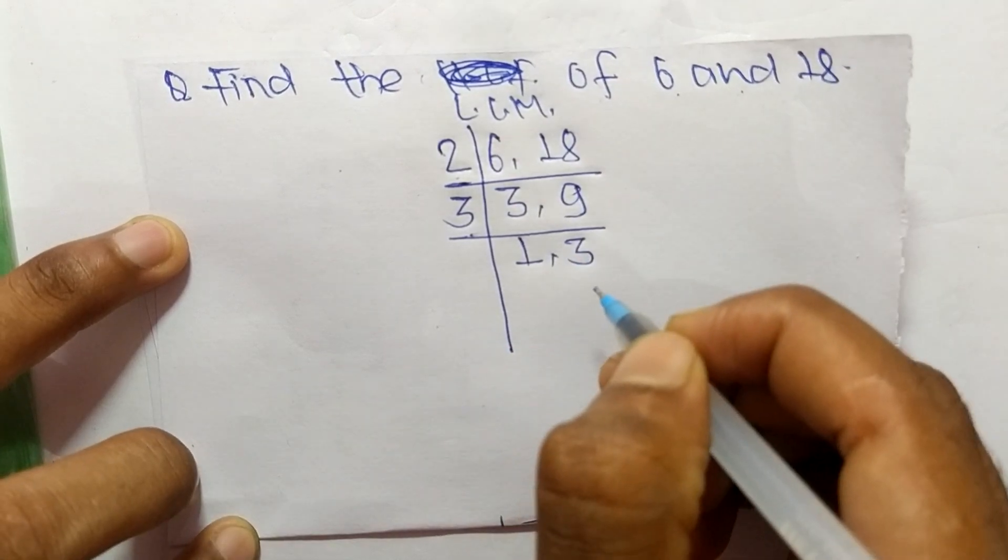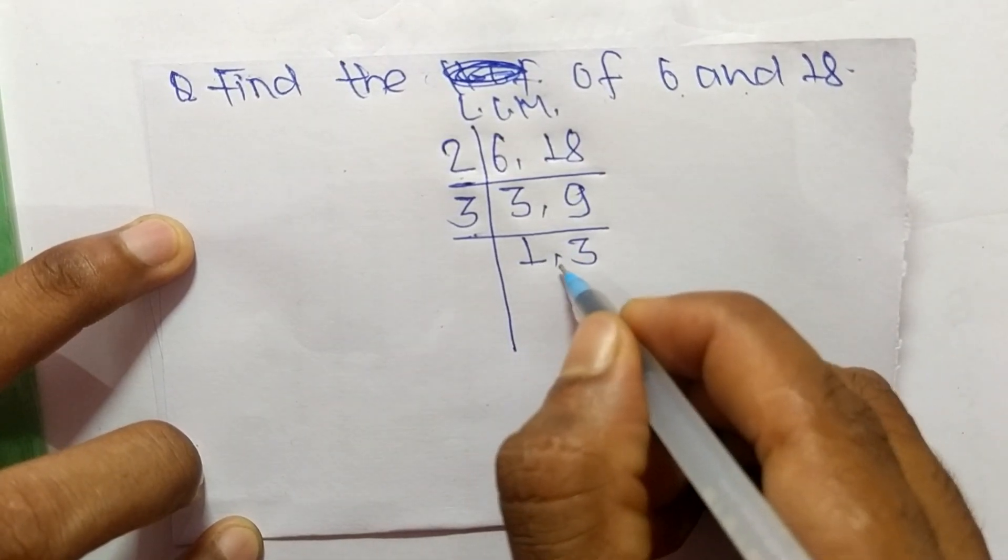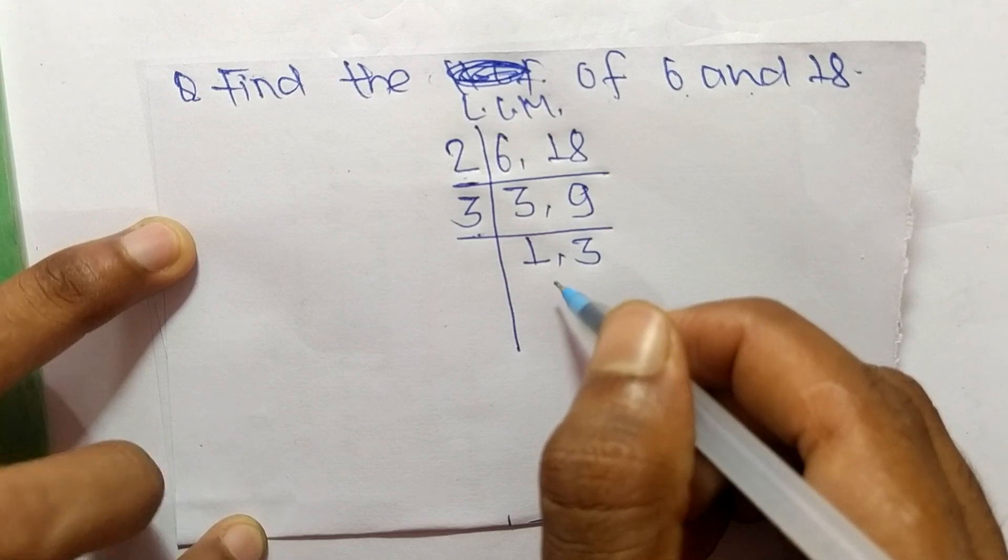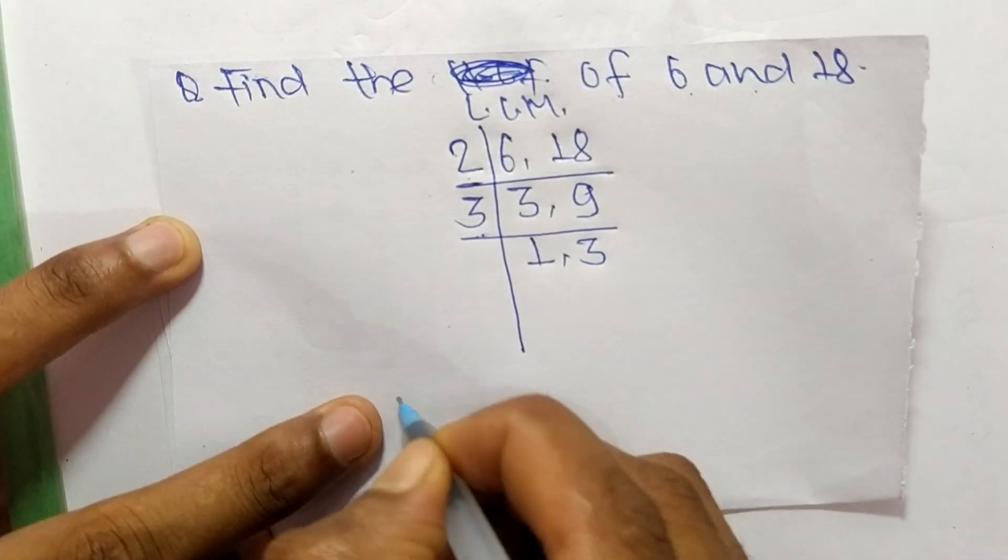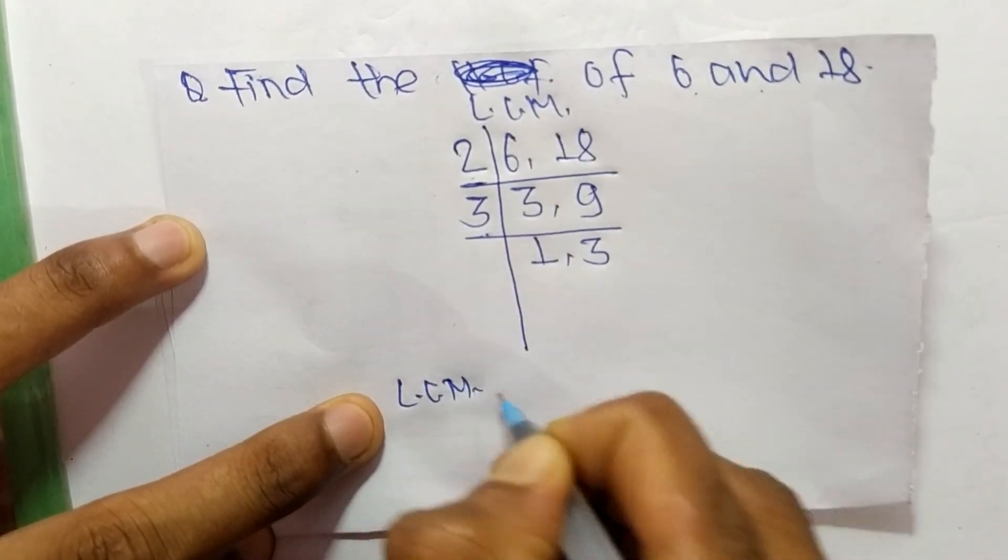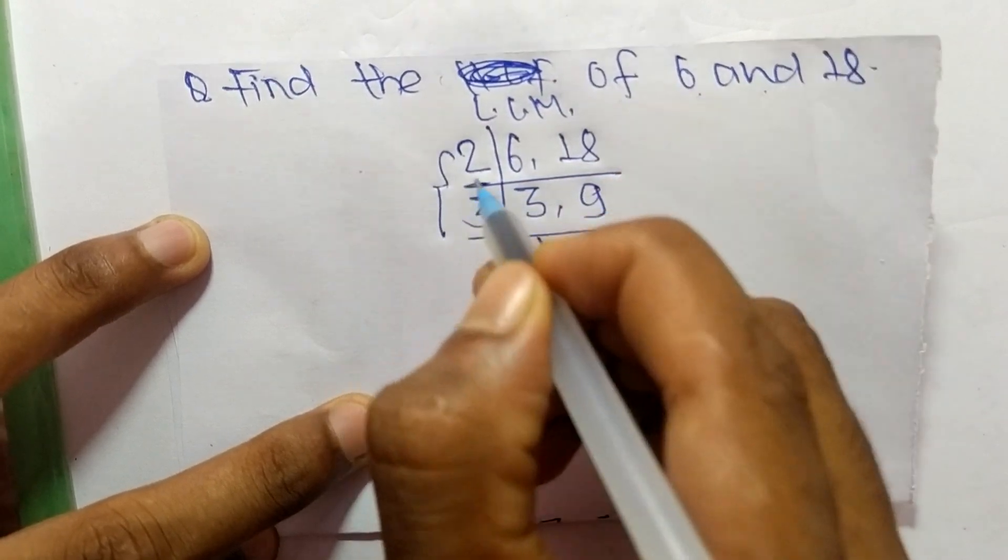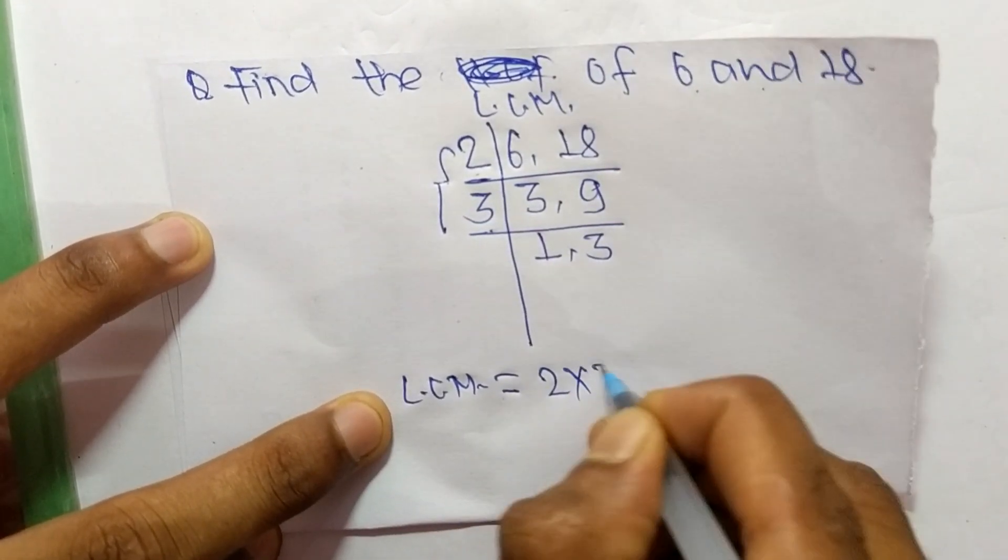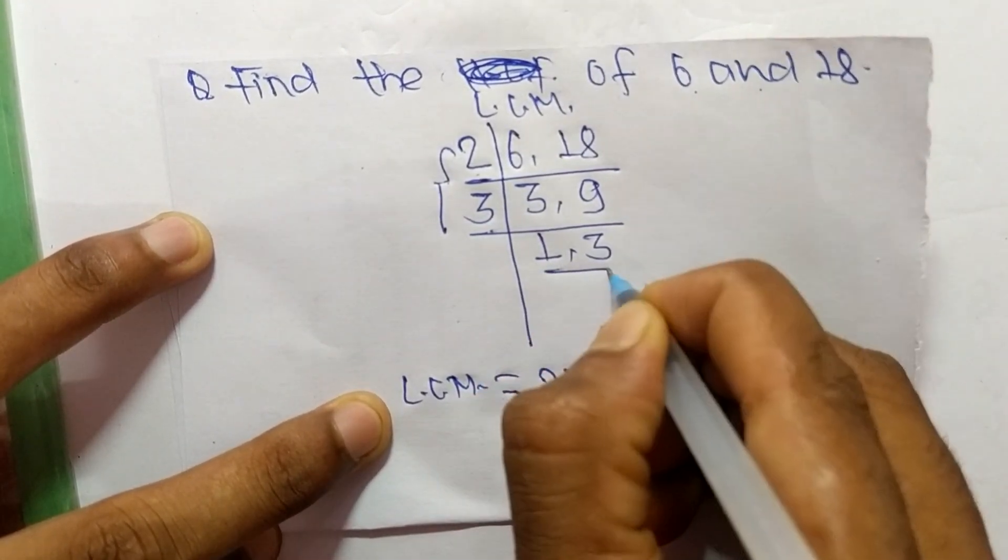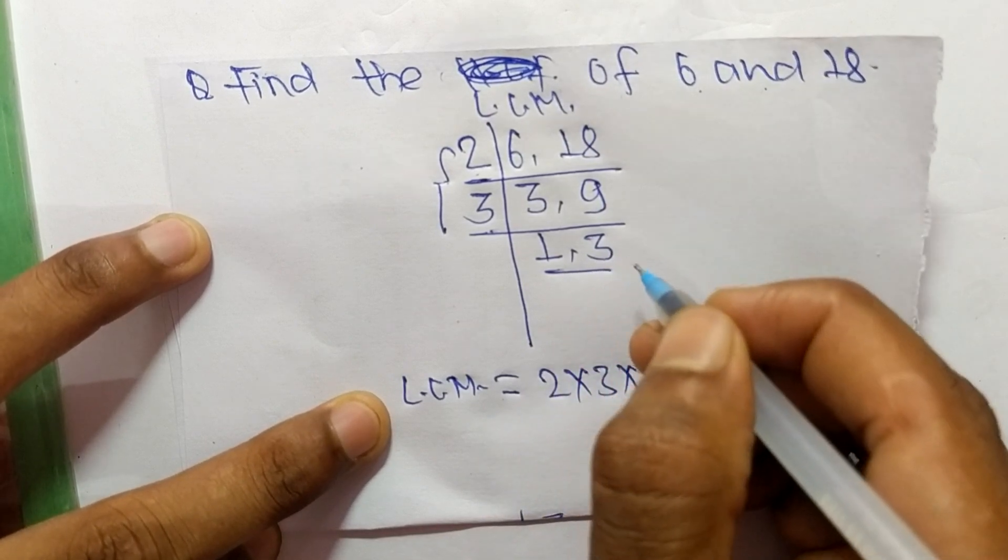So the LCM is equal to, from this part it is 2 times 3, and from this part we have 1 and 3, but we take here only 3 because by multiplying any number with 1 we get the same result.